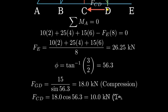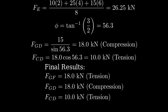Then, using horizontal equilibrium, we determine that the force in member CD is 10 kilonewtons in tension. Let's summarize our results. Member GF has a force of 18 kilonewtons in tension. Member GD has 18 kilonewtons in compression. And member CD has 10 kilonewtons in tension.